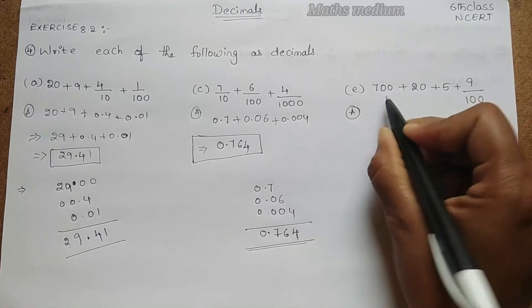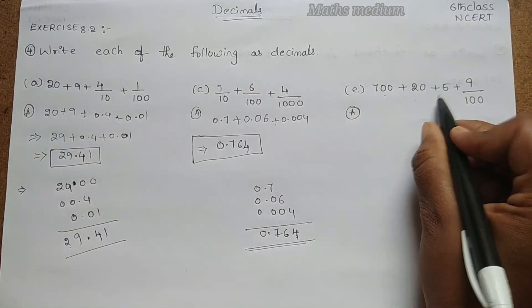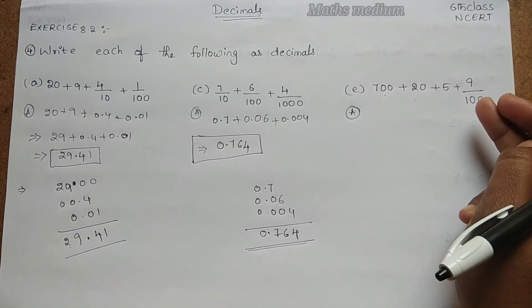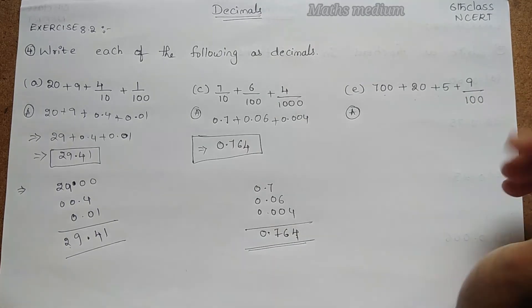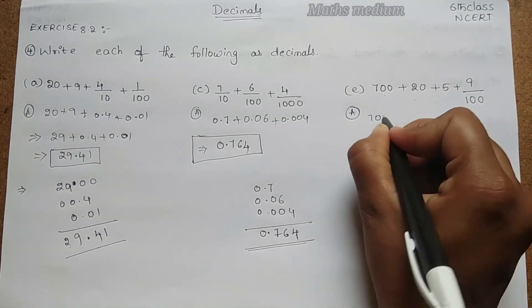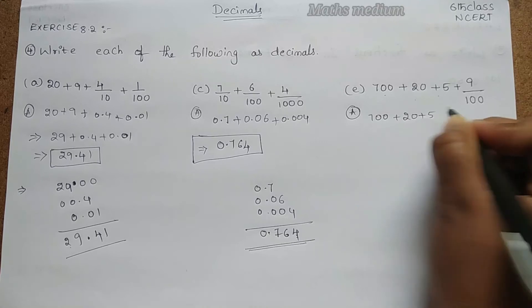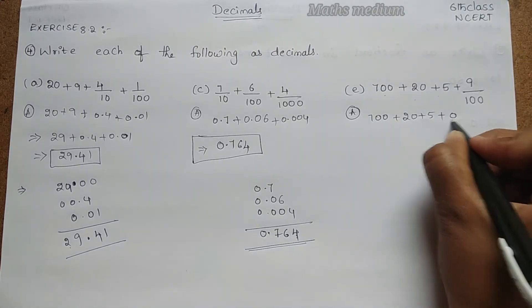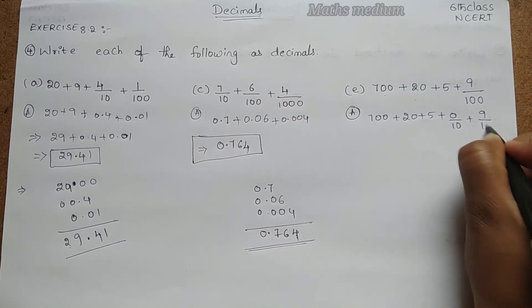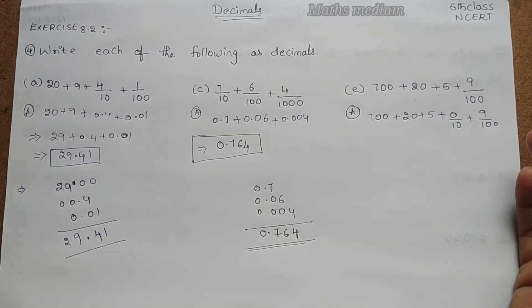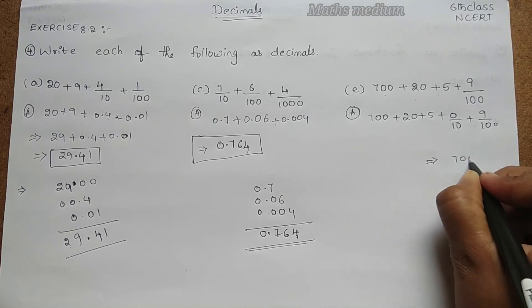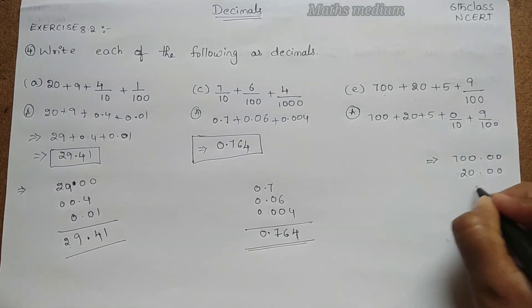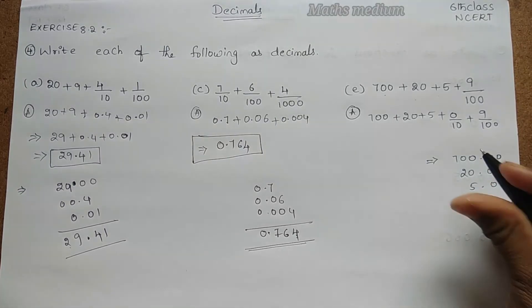Next, coming to this: this is 700 + 20 + 5 + 9/100. Here we have only one, that is 100th place, but there is no 10th place here. How are we going to convert this? See here, this is 700 + 20 + 5, plus if you have any confusion make it as 0/10, then 9/100. So here it is simple to add up, right? So start with 700.00 and 20.00, here 5.00.